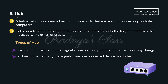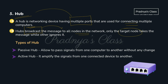The next network device is hub. Hub has multiple ports so that we can connect multiple computers. Hub broadcasts the message to all the nodes in the network, but only the target node will receive the message and others will ignore it. There are two types: passive and active. A passive hub allows signals to pass from one computer to another with no change in the signal, whereas an active hub amplifies the signals.